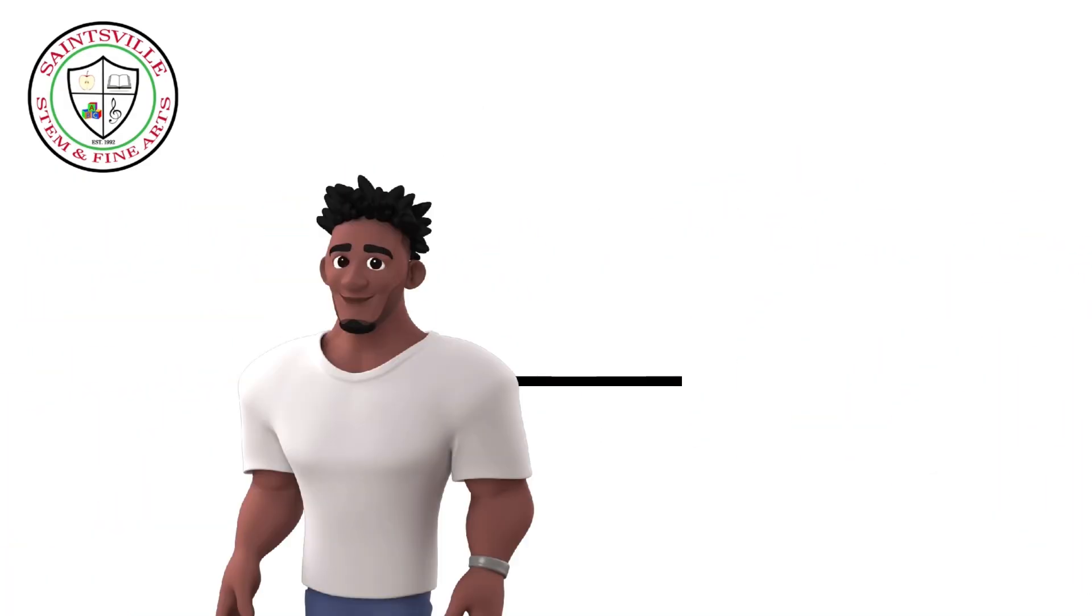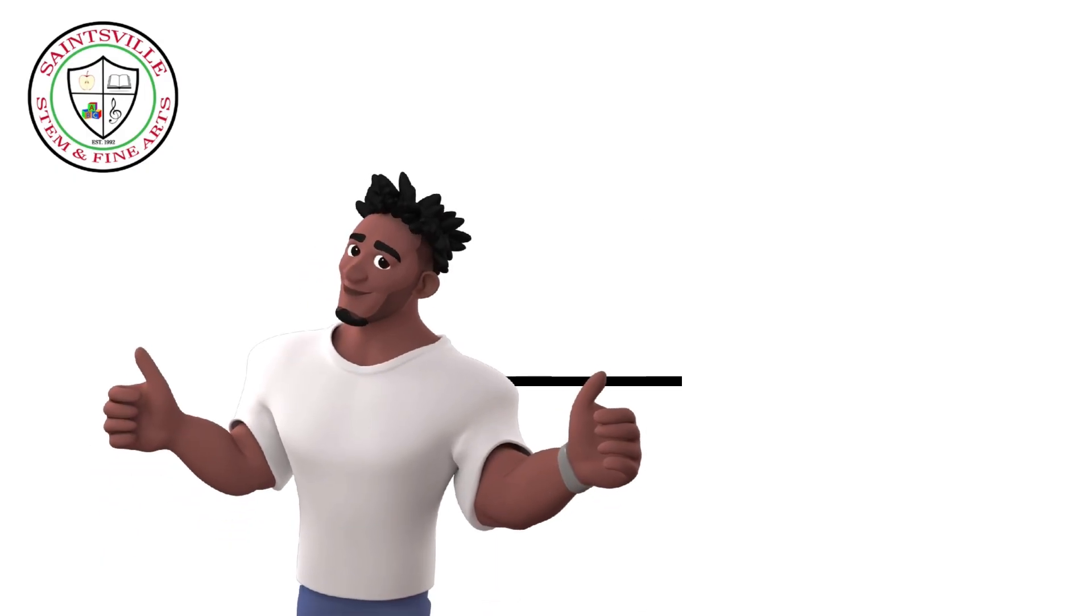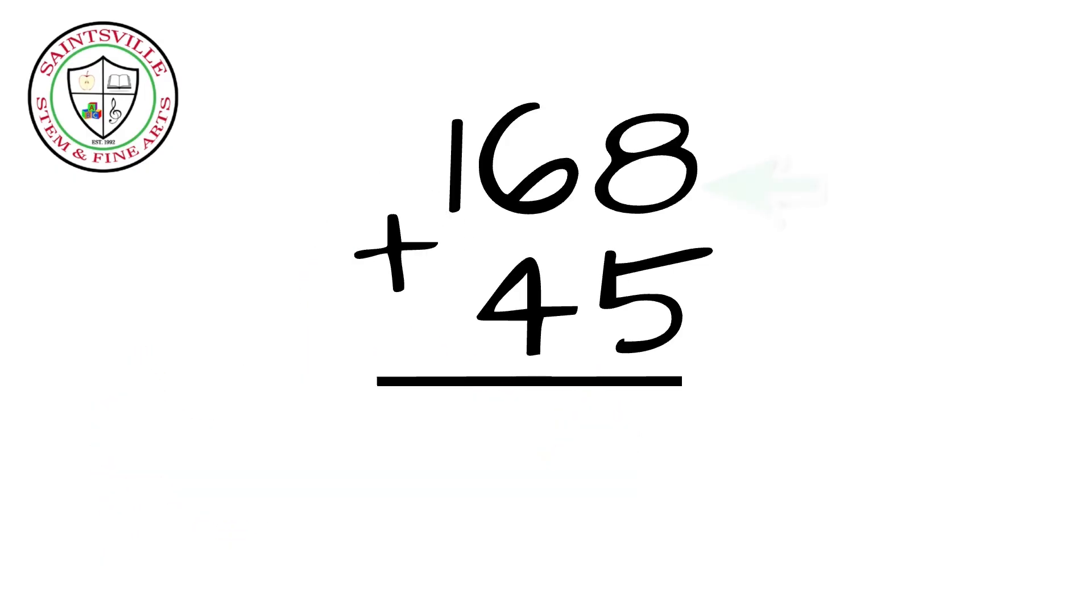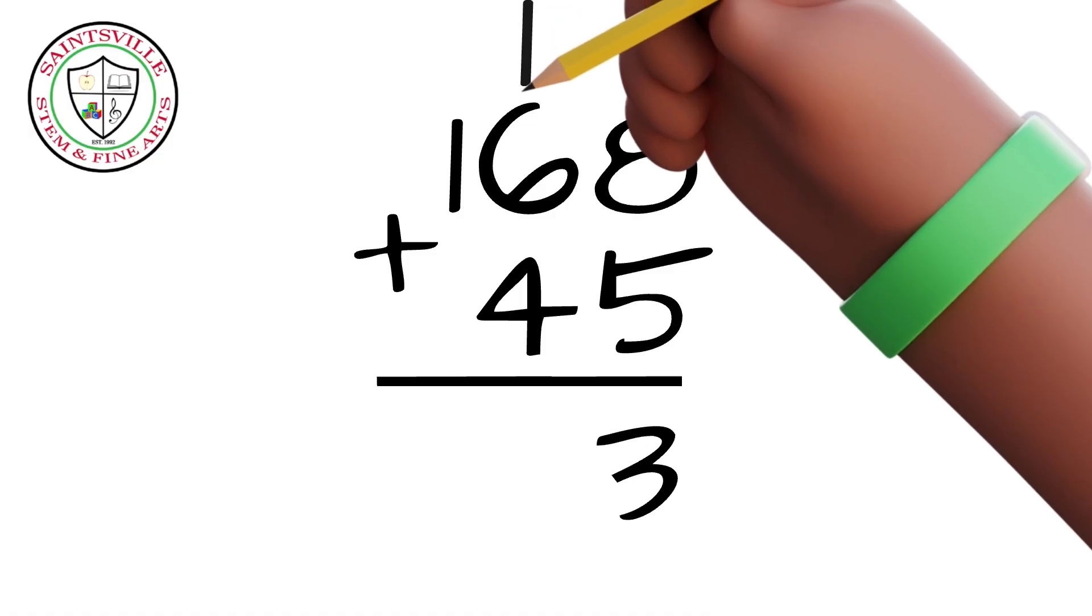Nice! Hey, that was pretty simple. Let's do another one. I always start in the ones place. So I add 8 plus 5 which is 13. I write the 3 in the ones column and carry the 1 to the tens place.